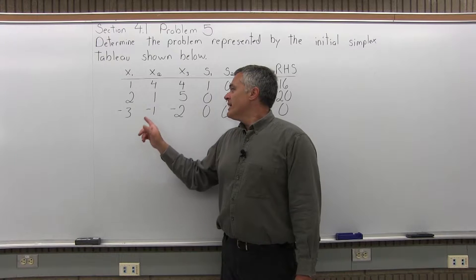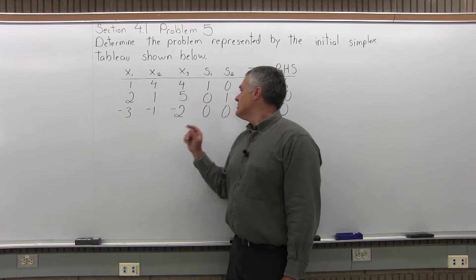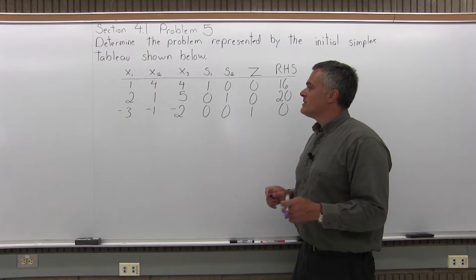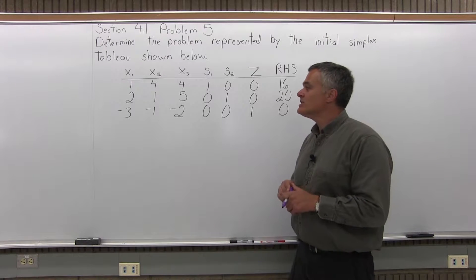And finally a third row: -3, -1, -2, 0, 0, 1, 0. So determine the problem represented by this initial simplex tableau.